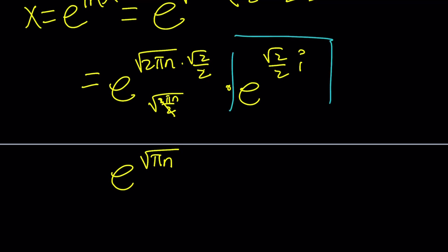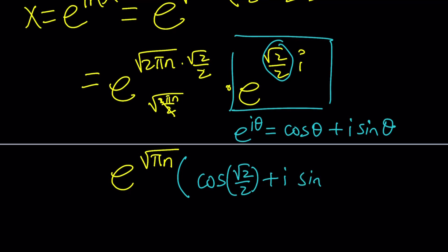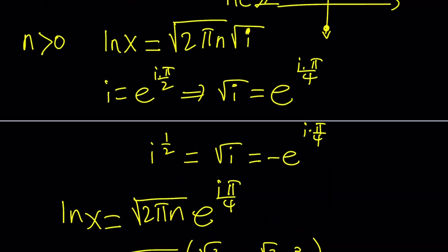For the remaining exponential, we apply Euler's formula: e^(iθ) equals cos θ plus i·sin θ. Here θ is √2/2, so that factor becomes cos(√2/2) plus i·sin(√2/2). Therefore x equals e^(√(πn)) times (cos(√2/2) plus i·sin(√2/2)). That's one family of solutions. The others are similar — just using a different angle — and ln x can also be the negative of this, giving another distinct value.